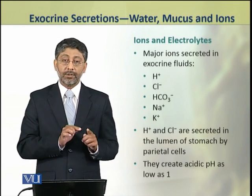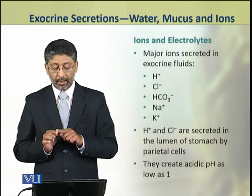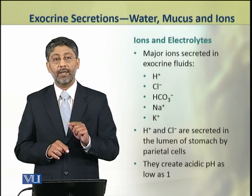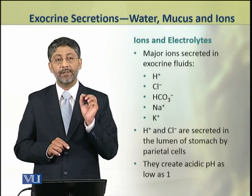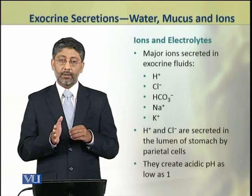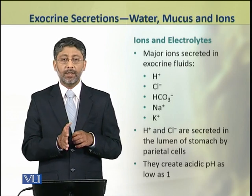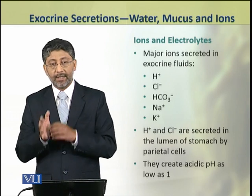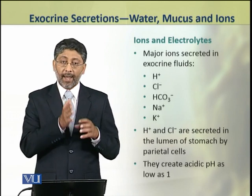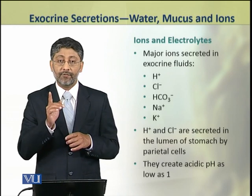The hydrogen and chloride ions are secreted into the lumen of the stomach by the parietal cells of the gastric glands. This is why the stomach's pH is highly acidic, being as low as a pH of 1.